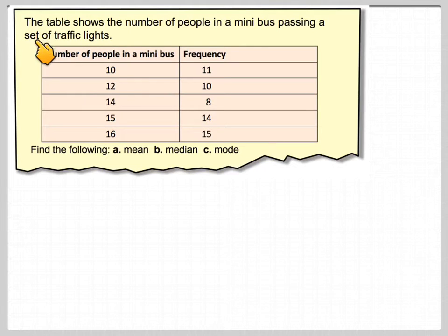In this video we've got a frequency table. The table shows the number of people in a minibus passing a set of traffic lights. So here we have 10 people in the bus, 12 people in the bus, 14 people in the bus, 15 people in the bus, 16 people in the bus, and here we have the frequency of each one.